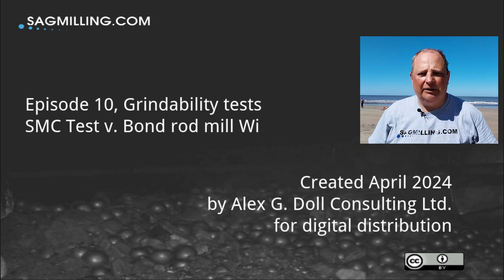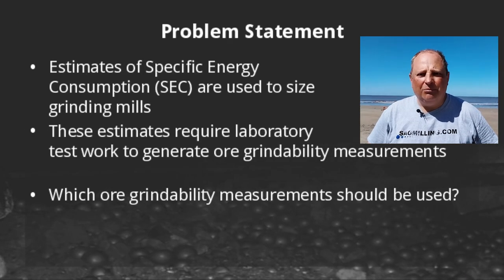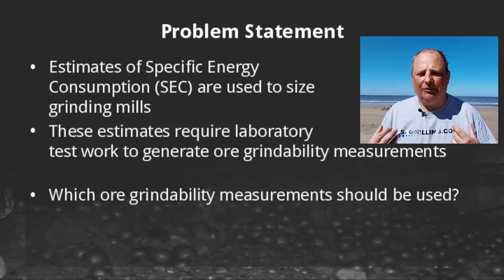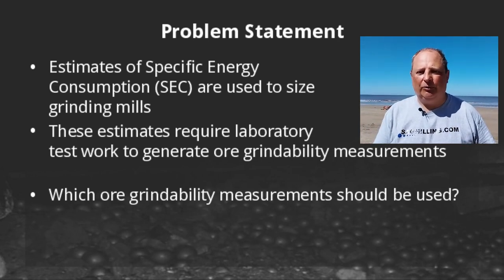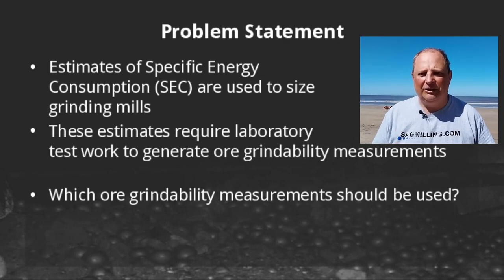Hello everybody. In today's video we're going to be talking about two of the grindability tests that are commonly used to size grinding mills. We're going to be looking at the SMC test and the Bond Rod Mill Work Index test. The problem statement: why do these tests exist? Because we as designers need to be able to measure the specific energy consumption needed to reduce a particular ore from a feed size to a product size, by going into a laboratory and making some measurement of the energy needed to break rocks. We'll be looking at how these two metrics are similar and how they're different, and how you can use them to come up with a good robust mill design for your project.